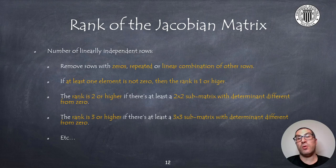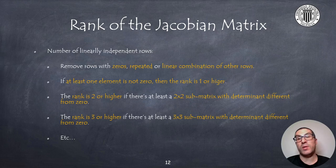So for this reason in order to compute the rank of the Jacobian matrix we need to find the number of independent rows or linearly independent rows. This can be done first by removing the rows with zeros or just simply repeated rows or rows that are a linear combination of other rows. Then we need to find which is the largest sub matrix with a non-zero determinant.